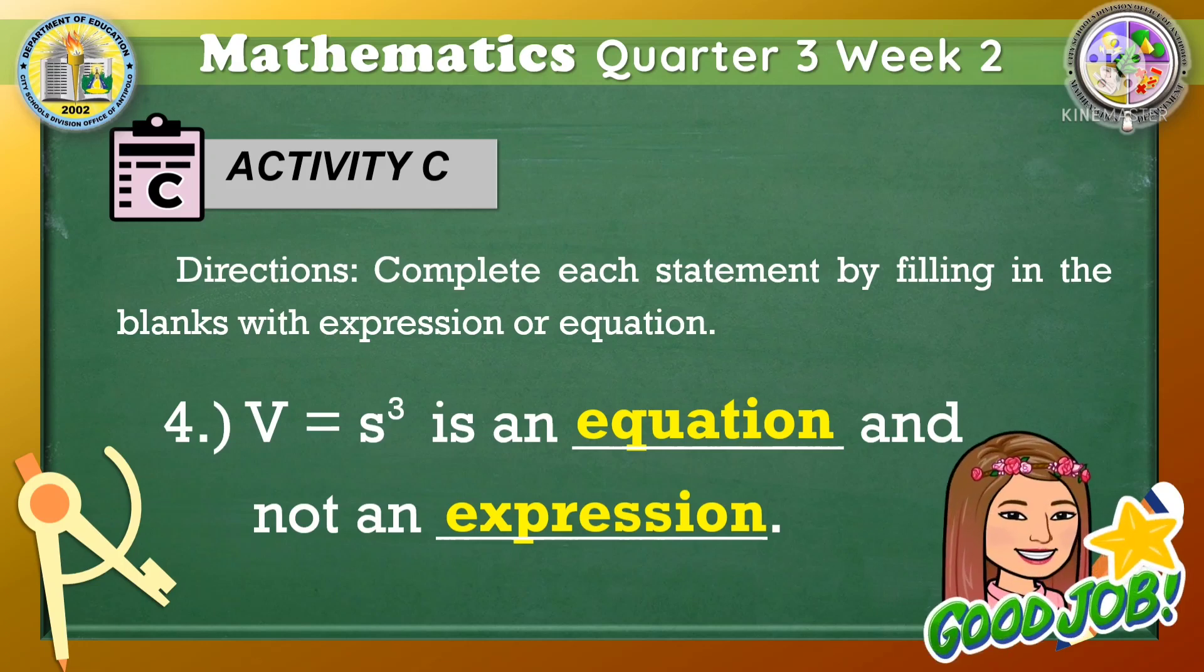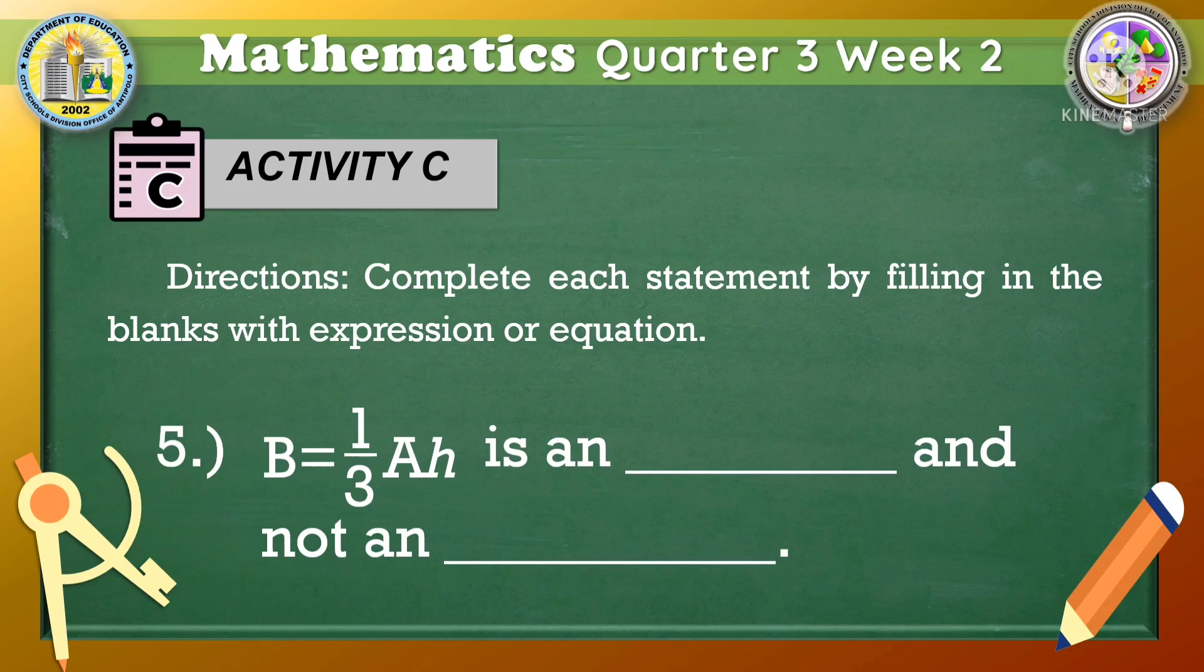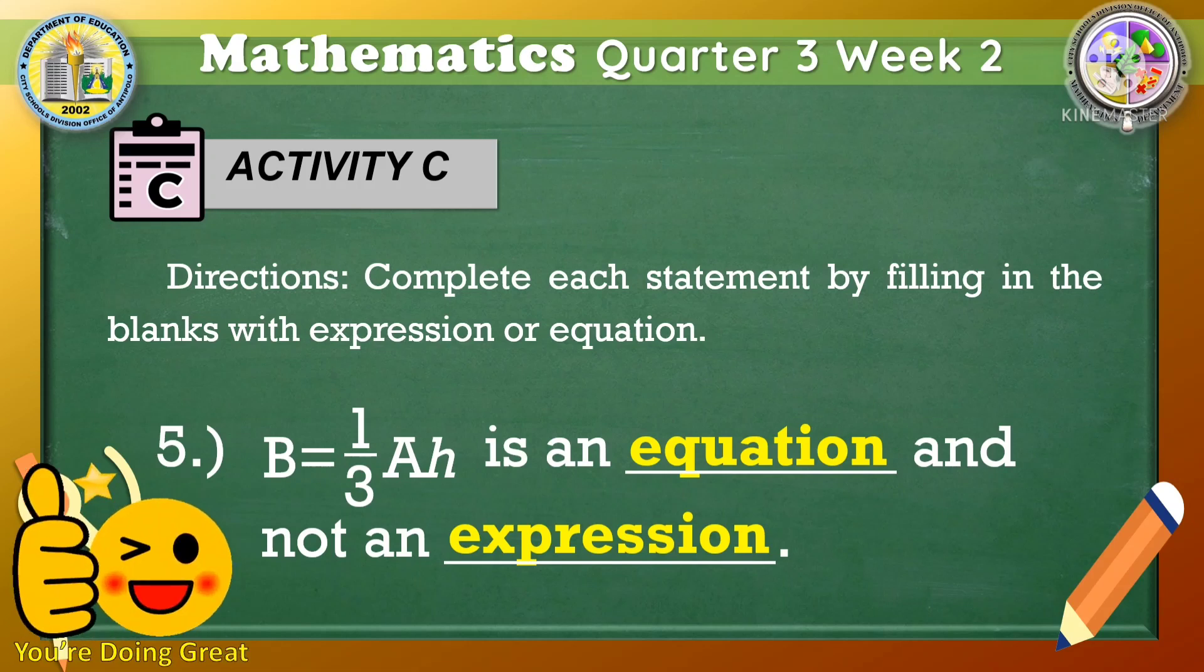For number 5, B is equal to 1 third AH is an equation and not an expression. Did you have the same answer? You're doing great!